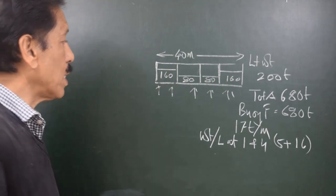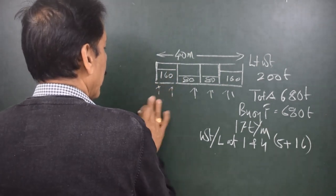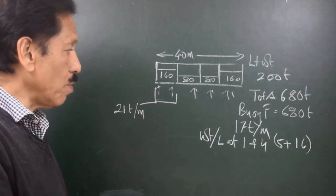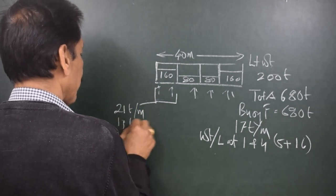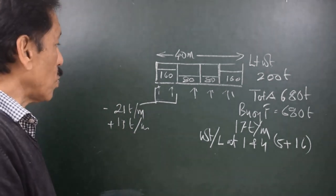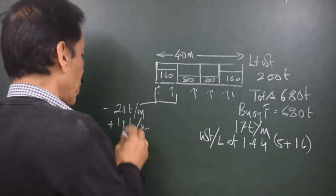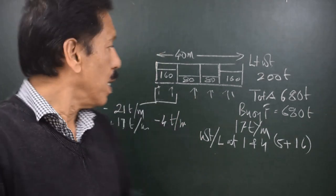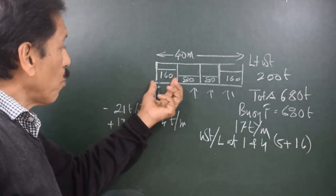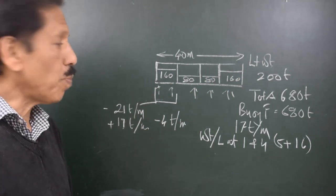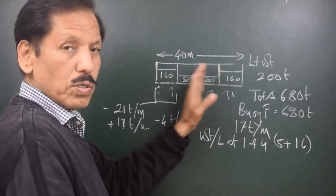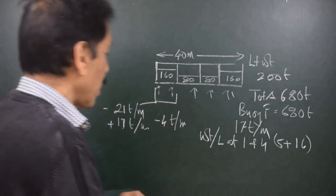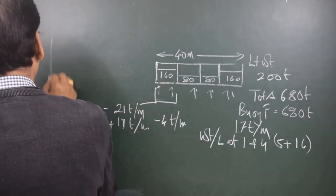So the total downward force at holds 1 and 4 is 21 tons per meter. But as stated, buoyancy force is uniform at 17 tons per meter. Therefore the resultant load per unit length acting in hold 1 is downward and equals minus 4 tons per meter. Similarly, for holds 2 and 3, doing the same calculations gives an upward load of plus 4 tons per meter. If you draw the load curve for this loading, it can be represented accordingly.